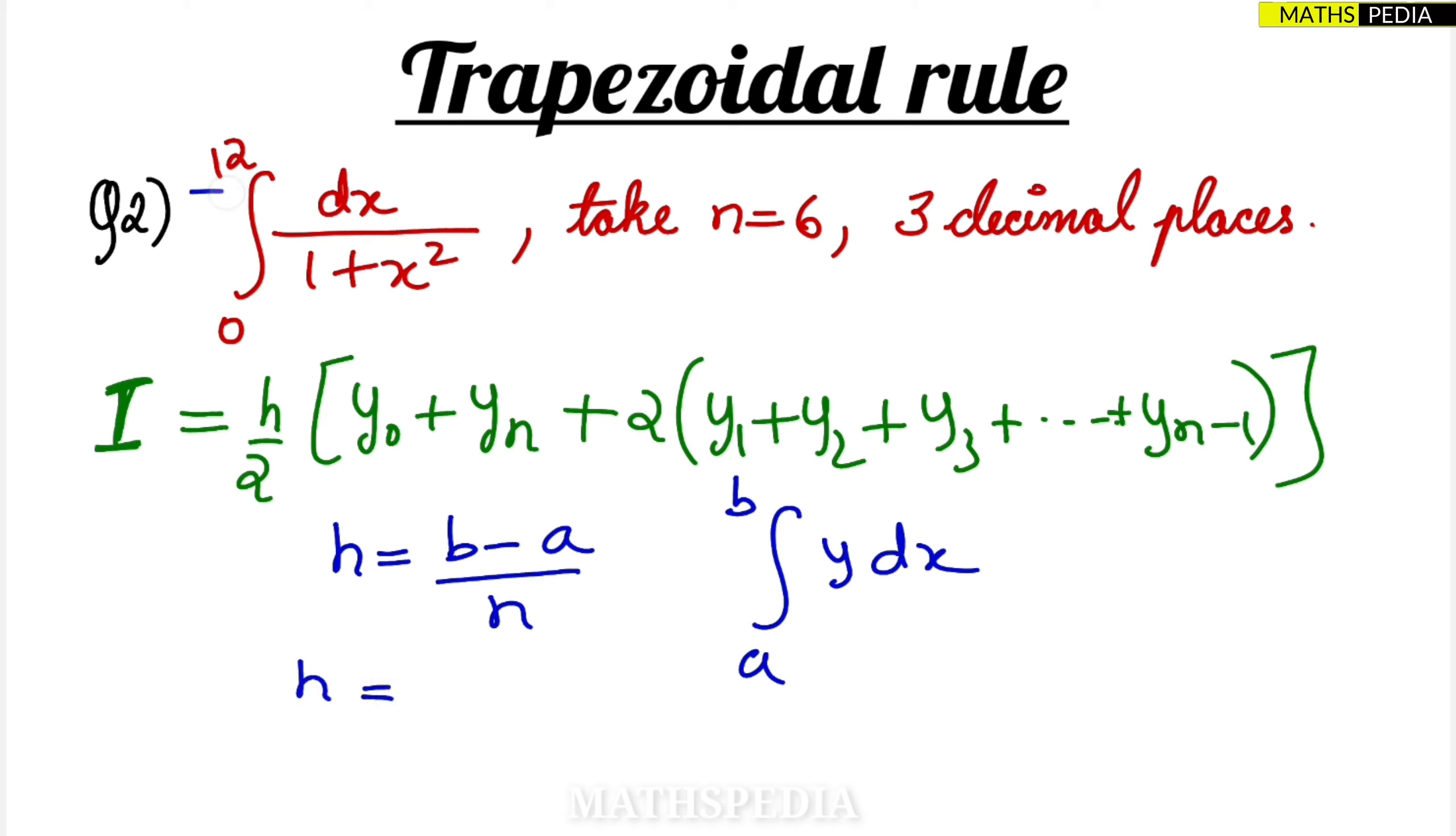So h is equal to upper limit, which is 12 in the question, minus lower limit which is 0, divided by n. n is the interval they have given in the question. So 12 by 6 is nothing but 2, so h is equal to 2. Now what is the use of taking h? h is the width - that means from 0 till 12 you have to go, but you have to take the steps of 2. That means you have to take 0, then next step will be 0 plus 2 which is 2, then 2 plus 2 is 4, like that you have to reach 12.